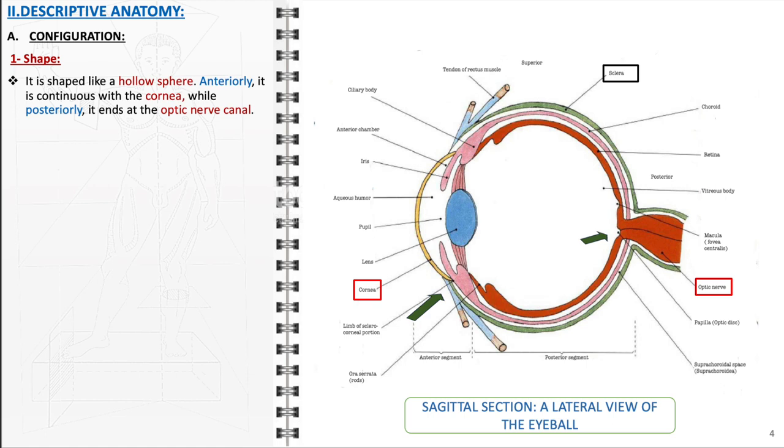The sclera, shaped like a hollow sphere, forms a continuous structure with the cornea at its anterior aspect and extends to the optic nerve canal at its posterior end.